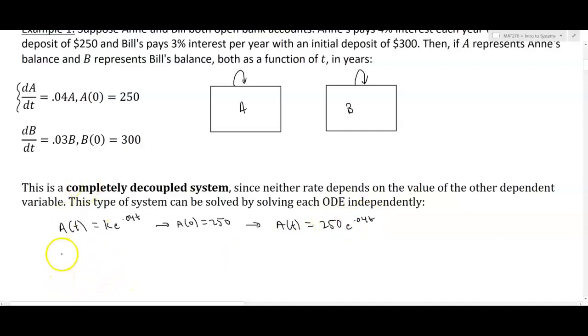For B(t), similar process. For B(t), it's going to be k e to the 0.03t. And we probably should distinguish between these k's. Not that we're going to end up using them collectively, but we probably should call this k sub A, and maybe we should call this k sub B, just to emphasize that they're not the same initial values. And you'll see later on that the k's actually do end up mixing into one another for non-partially decoupled systems.